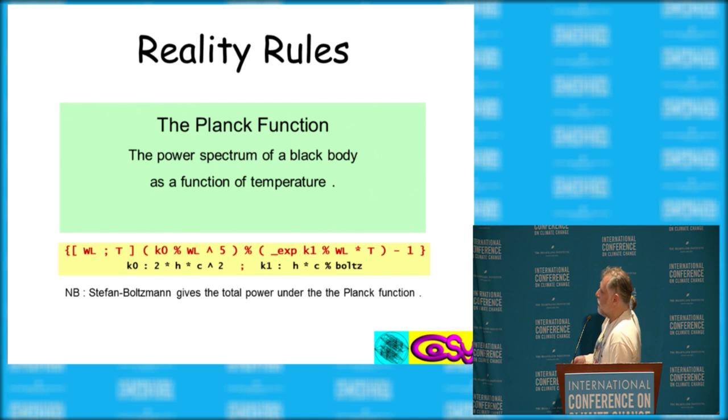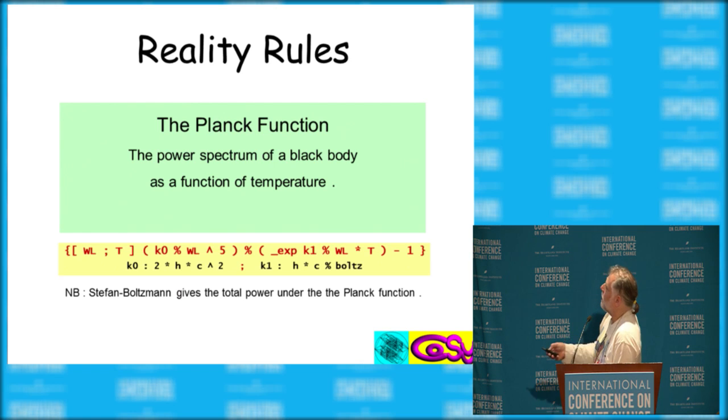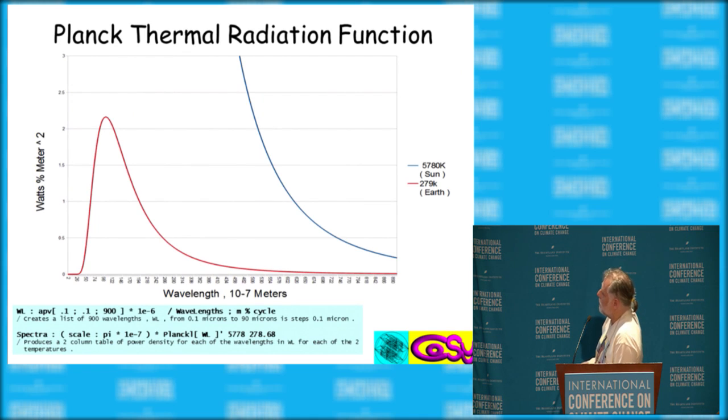which was the crowning achievement of 19th century physics. And Stefan Boltzmann is the total power. Here's all the code that's in here. This is actually for 900 wavelengths. This produces 900 wavelengths. This applies it for temperature of the sun and approximate temperature of the earth.